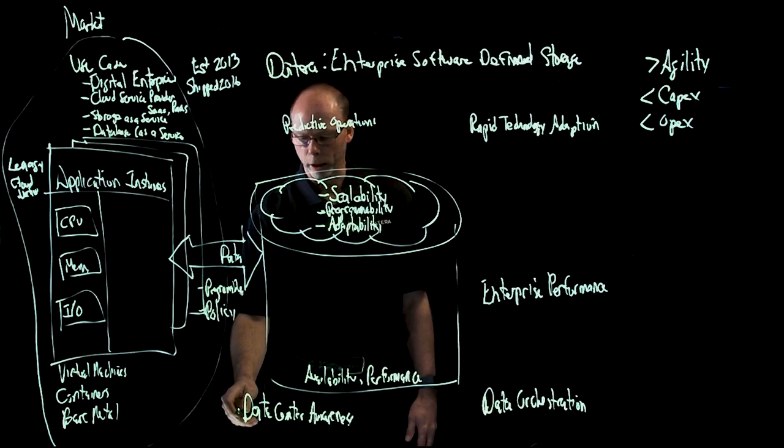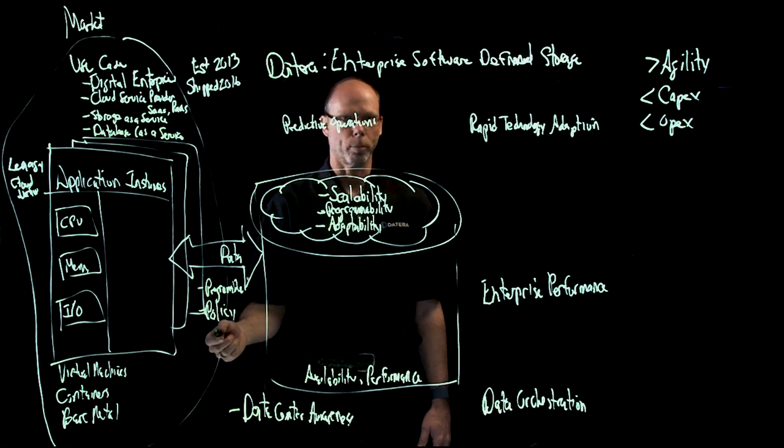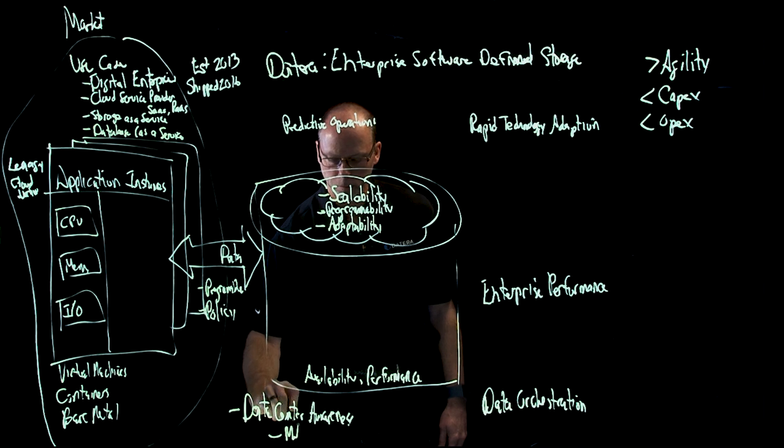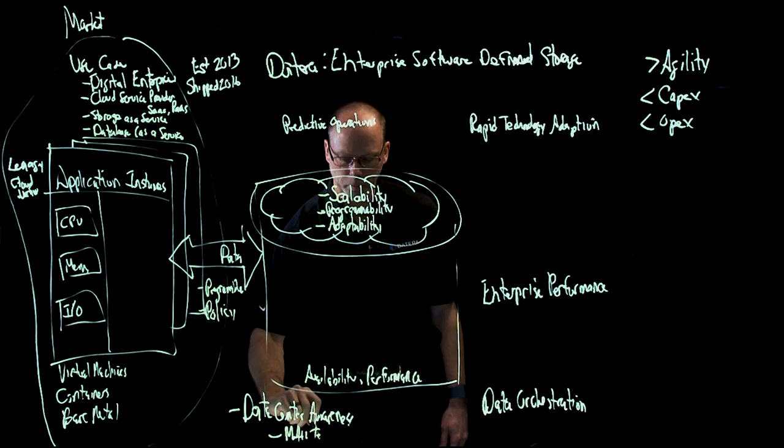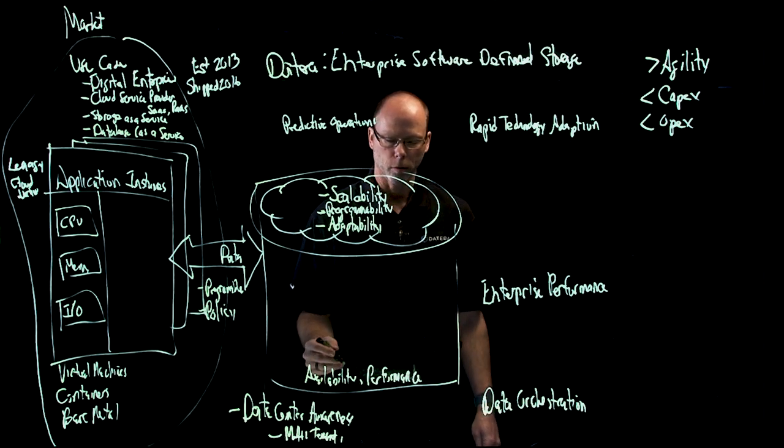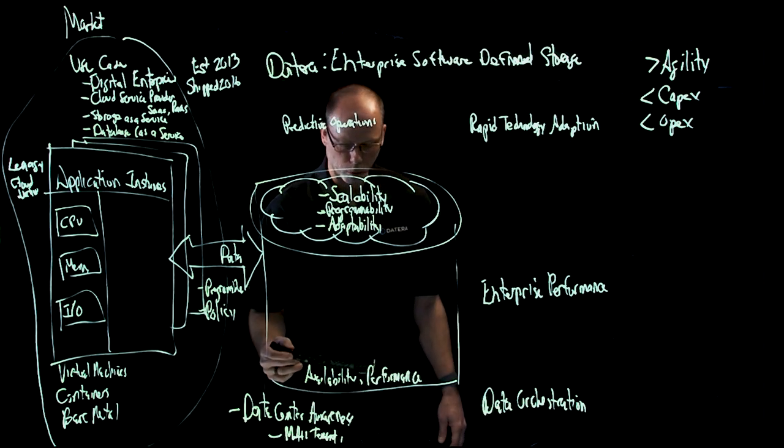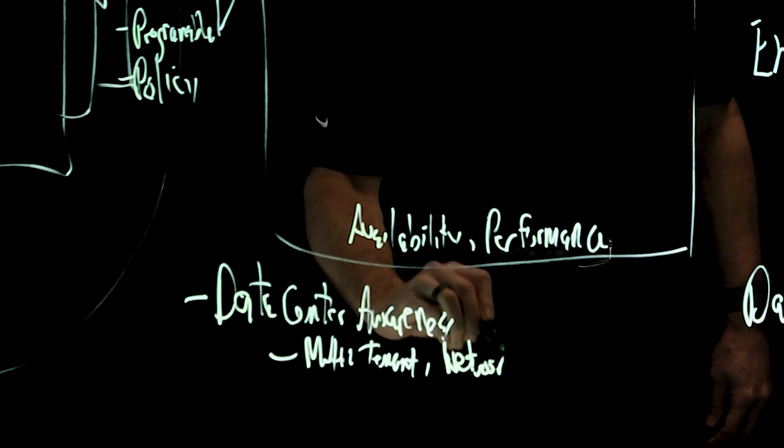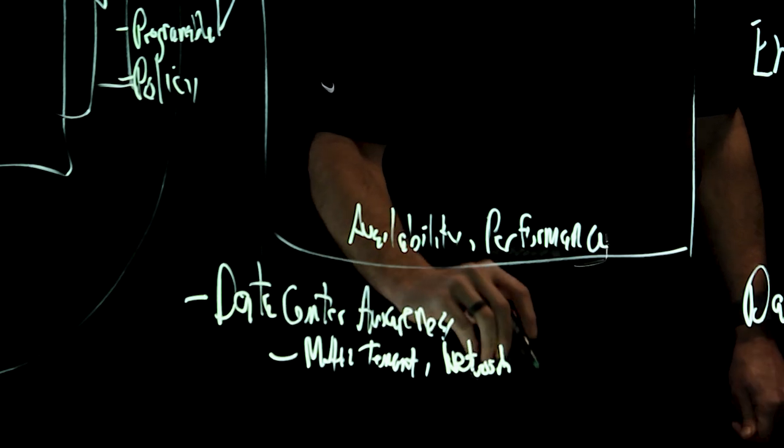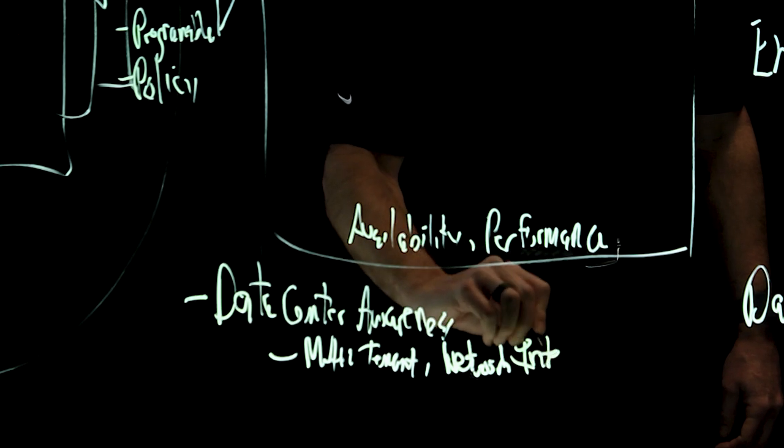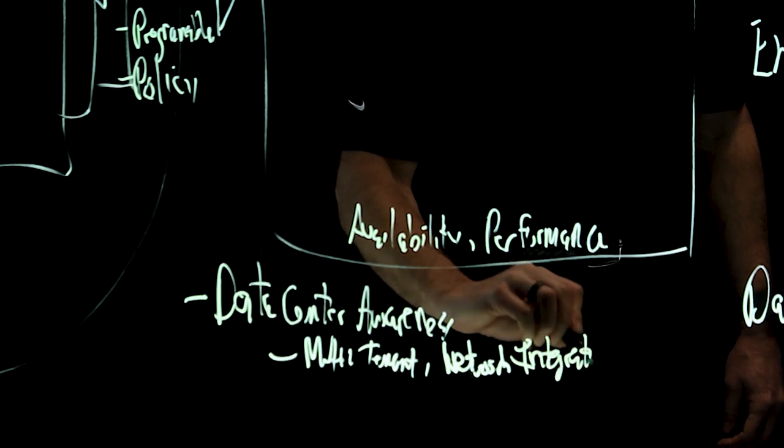When we talk about data center awareness, we really talk about three attributes. First is the notion that we already mentioned this as multi-tenancy. Next is network integration. One of the things we discovered early on with our customers, especially those customers deploying cloud-like environments, is they have a network architecture. And unlike old SANs, we can no longer specify or dictate the network architecture. We must be a good citizen within the company's network architecture that exists.